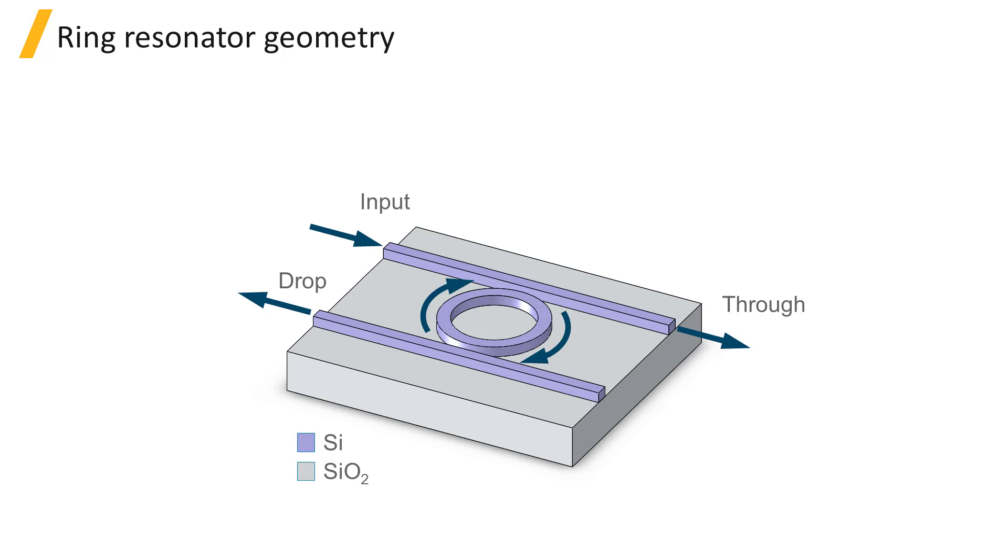This device is a silicon on insulator device with two straight silicon waveguides and a ring in between, on top of a glass substrate. The cladding above is air.